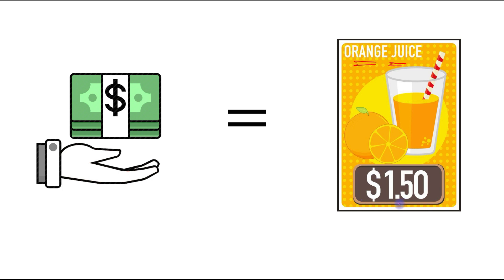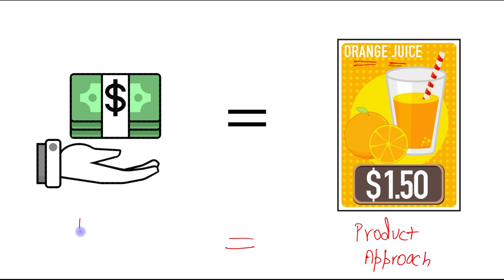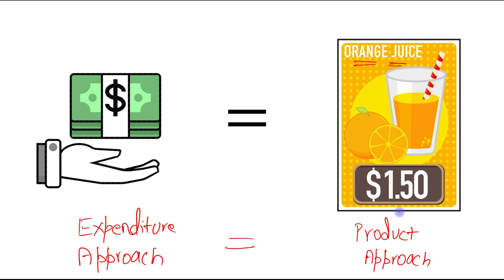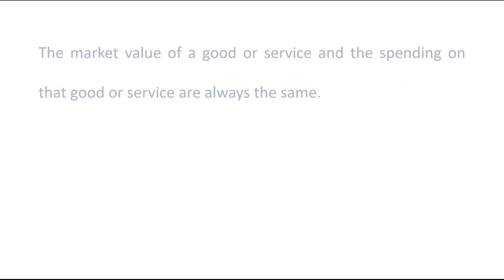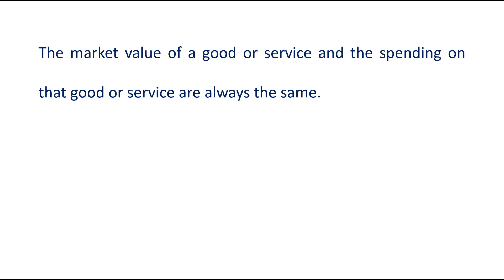Suppose that the market value of the orange juice is dollar 1.50 — this is its market value. Now the buyer must spend dollar 1.50 in order to purchase the orange juice. That means the product approach, which measures the market value of goods and services, is equal to the expenditure approach, which measures the amount spent by the ultimate user. The market value of a good or service and the spending on that good or service are always the same.